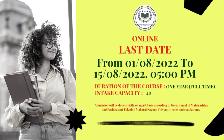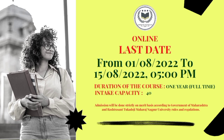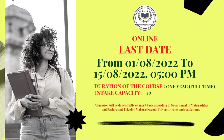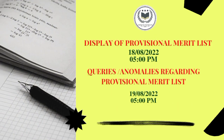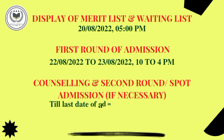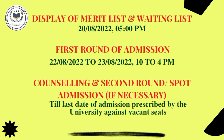This is a one-year course and it has only 40 seats. The online registration is open from 1st August to 15th August 2022 till 5 p.m. Display of the provisional merit list will be on 18th August 2022. Queries regarding the provisional merit list will be entertained on 19th August 2022. Display of the merit list and waiting list on 20th August 2022. The first round of admission will start from 22nd to 23rd August 2022. Counseling and second round or spot admission, if necessary, will last till the last date of admission prescribed by the university against vacant seats.